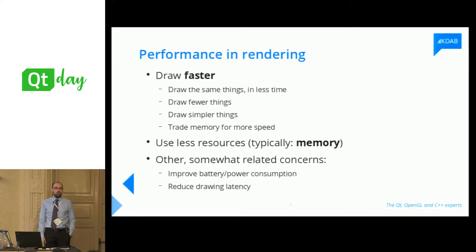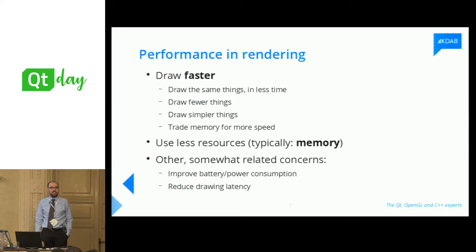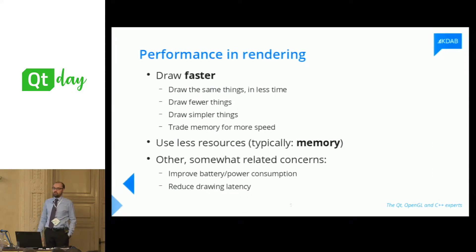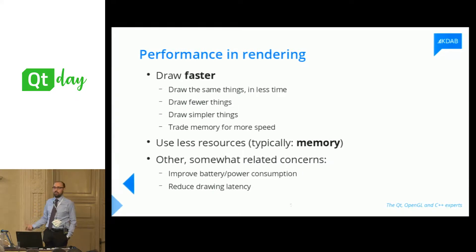When it comes to performance in rendering, what do we mean? Well, typically the obvious: draw faster. However, how to achieve that can be approached in different ways. A simpler way is drawing the same things but in less time — optimize how you draw. You can also decide to draw fewer things, draw simpler things, trading quality for speed, or trade memory for speed using techniques like caching. Other concerns are also important: use less resources, typically memory, improve battery consumption, reduce drawing latency.